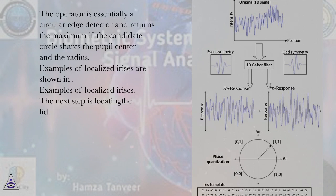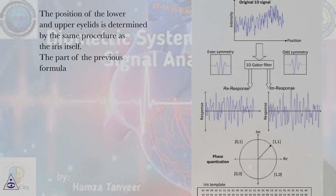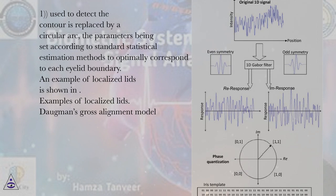Examples of localized irises are shown. The next step is locating the lid. The position of the lower and upper eyelids is determined by the same procedure as the iris itself. The part of the previous formula used to detect the contour is replaced by a circular arc, the parameters being set according to standard statistical estimation methods to optimally correspond to each eyelid boundary.